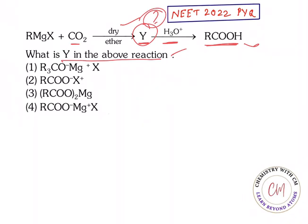Let us see the mechanism. What is RMgX? RMgX is the Grignard reagent. The R in RMgX is generally a nucleophile, meaning it is a carbon with more electron density or high electron density.